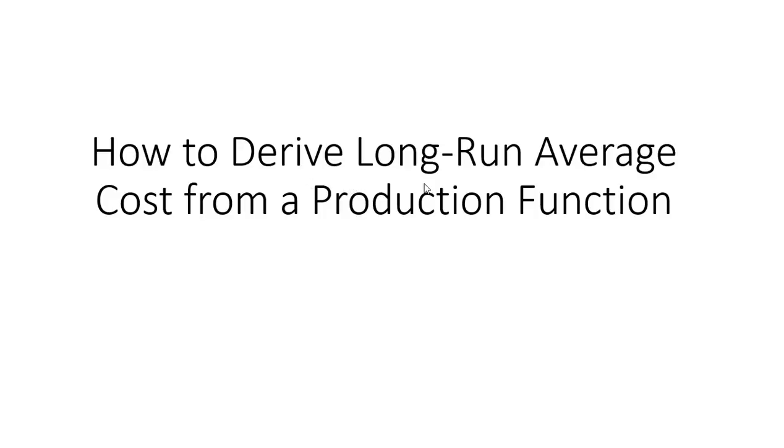Hello. In this video, we're going to learn how to derive long-run average cost from a production function. So here's our production function. Output equals units of capital times units of labor.